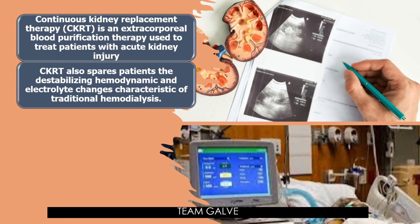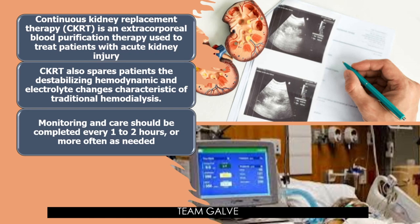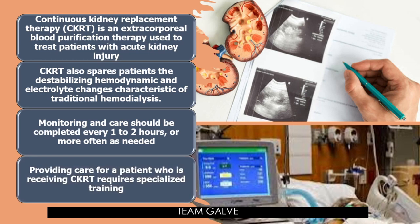Care for a patient who is receiving CKRT involves monitoring and care of the patient with the CKRT system. Monitoring and care should be completed every one to two hours, or more often as needed. In our facility, we do monitoring Q1 — every one hour — since the beginning of CRRT. There is a CKRT or CRRT sheet filled out by nurses, monitoring the CRRT machine settings and the patient's vital signs. Q1 or Q2 depending on your facility.